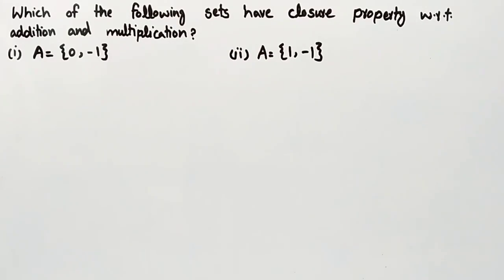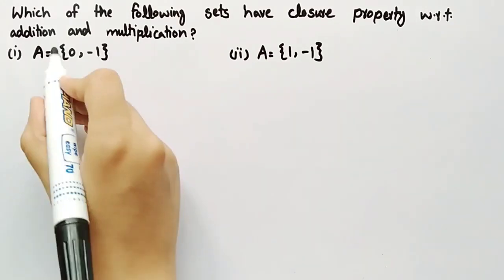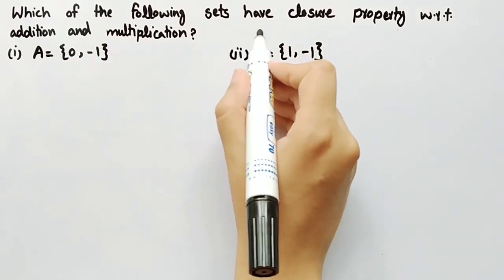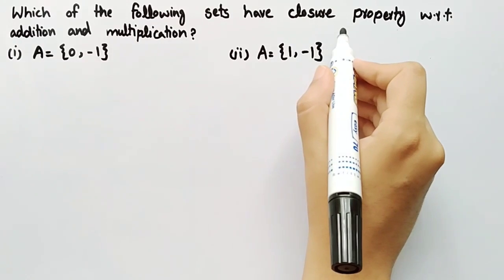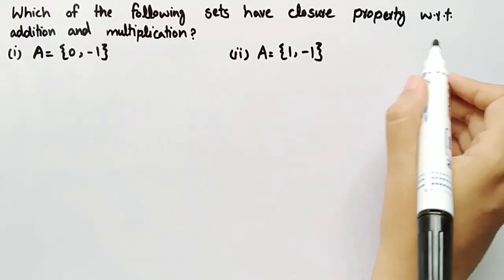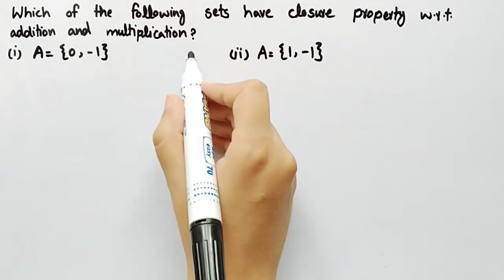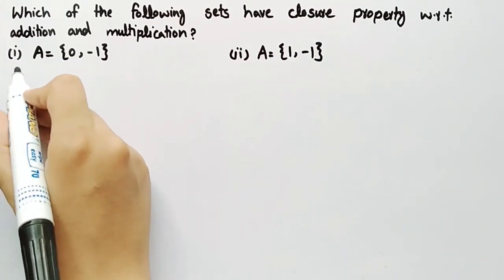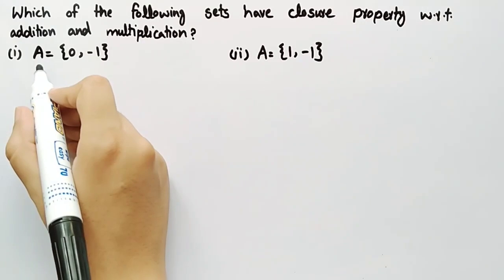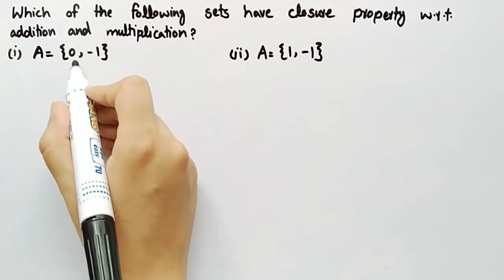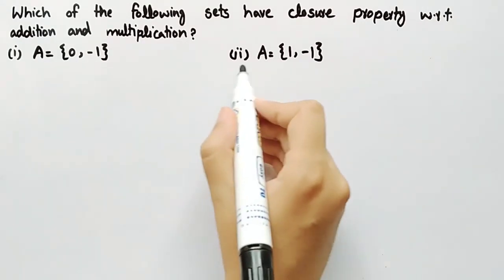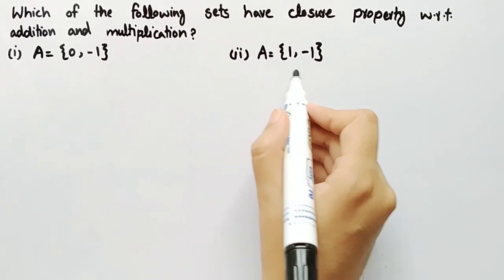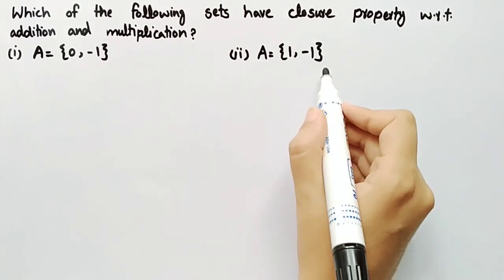In this video we will find which of the following sets have closure property with respect to addition and multiplication. The first set is A = {0, -1} and the second set is A = {1, -1}.